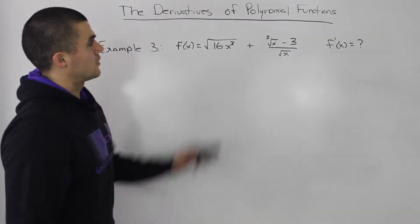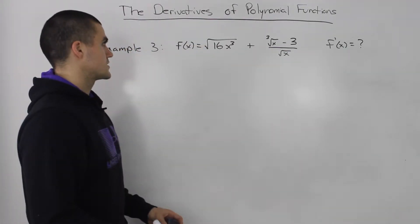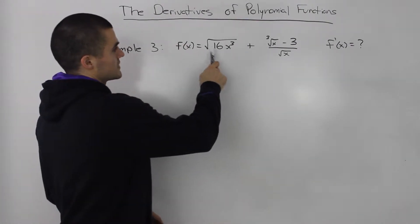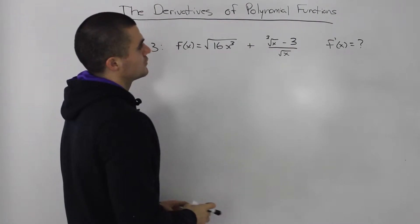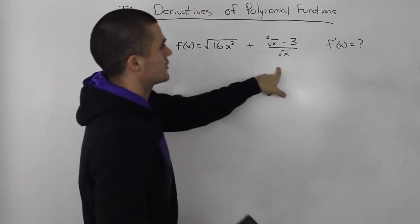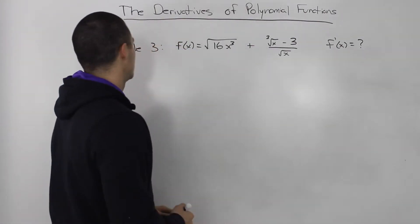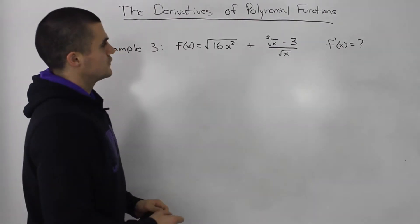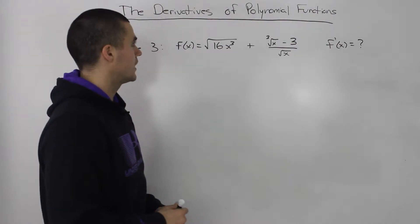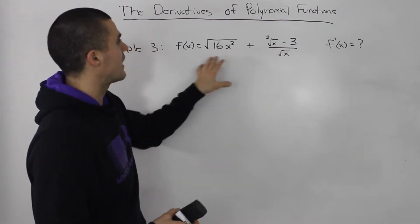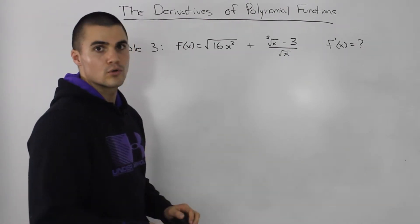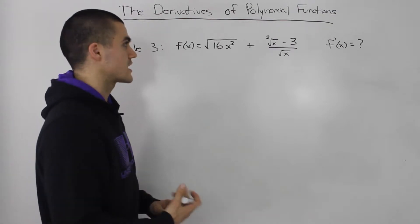Third example for derivatives of polynomial functions. We have this function: the square root of 16x cubed plus the third root of x minus 3, all over the square root of x. We have to find the derivative. Similar to example 2, you want to simplify the function a bit before taking the derivative, so we can apply the power rule, the constant multiple rule, etc., more easily.